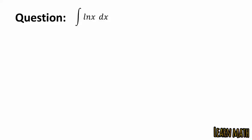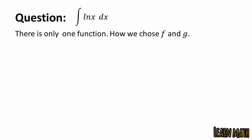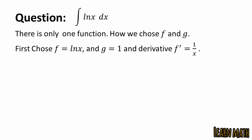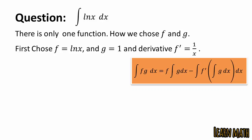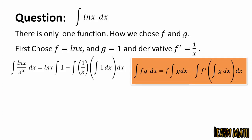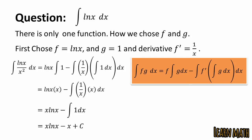The next question is: find the integration of log x dx. There is only one function, so choose f equal to log x and g equal to 1, and the derivative of f is 1 over x. By using integration by parts, we get log x times the integral of 1, minus the whole integral of 1 over x times the integral of 1 dx. Simplifying: log x times x minus the integral of 1 over x times x dx, which gives x log x minus the integral of 1 dx, so the result is x log x minus x plus c.